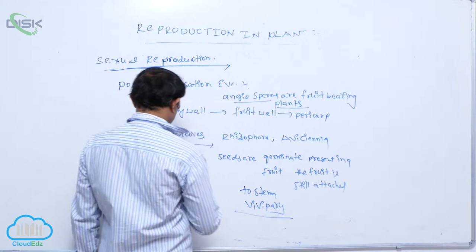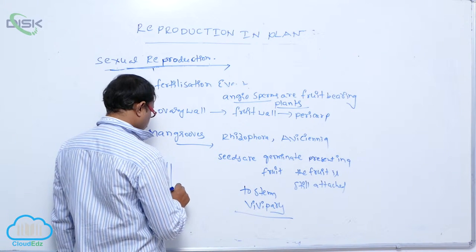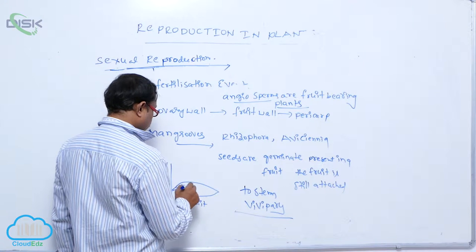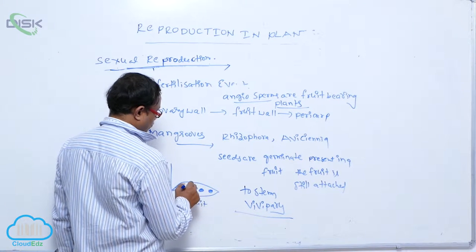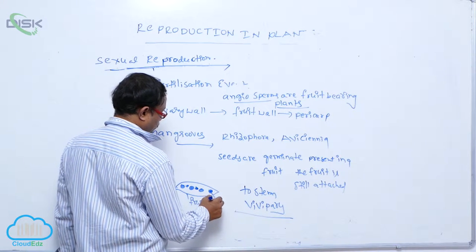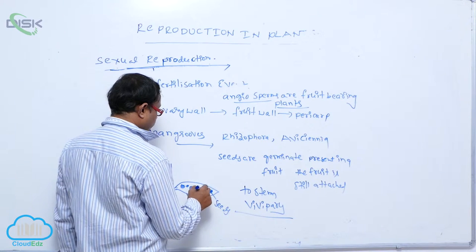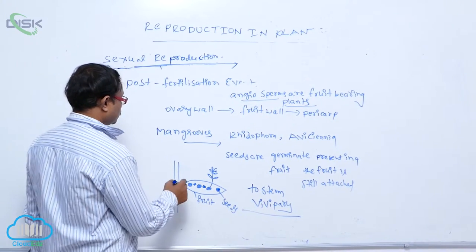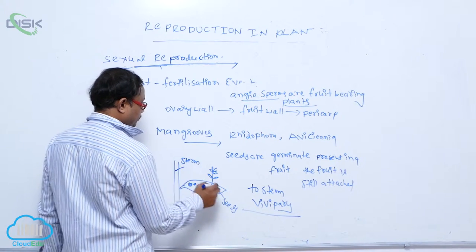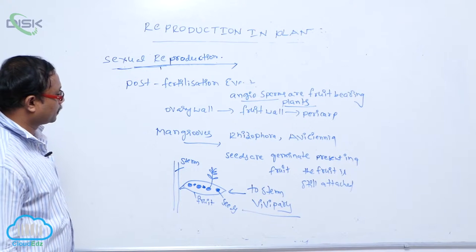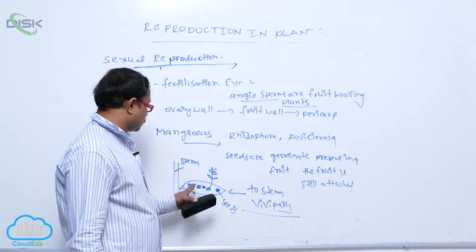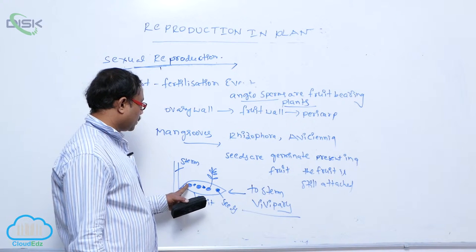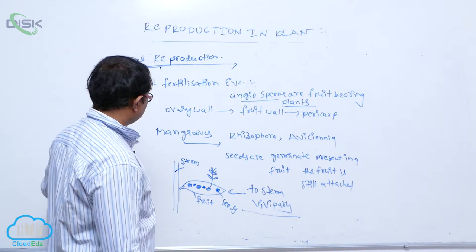This condition is known as vivipary. For example, it is a plant with a stem producing a fruit, and inside the fruit there are seeds. These seeds germinate to produce a plant while the fruit is still attached to the stem — that is the vivipary condition. Seeds cannot germinate before falling on the soil.